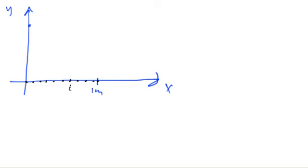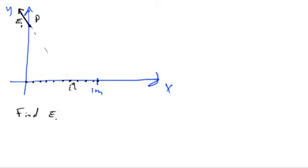Here's my plan: I'll find the electric field due to the i-th particle, which has a charge q, at point p. If q is a positively charged particle, E will look like this, and I'll break that up into its components. So I'll find E_i — the electric field due to the i-th particle which has a charge q.